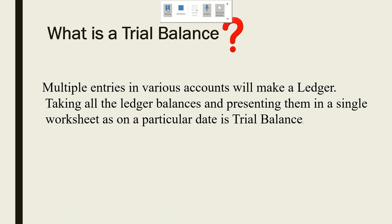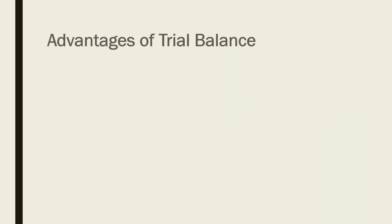Whatever ledger balances we have, we carry them forward to the trial balance. In the trial balance there are only two aspects: one is the debit aspect and one is the credit aspect. In the debit aspect we record all assets and expenditures; in the credit aspect we record all liabilities and incomes. Let me now look at what advantages a trial balance provides.